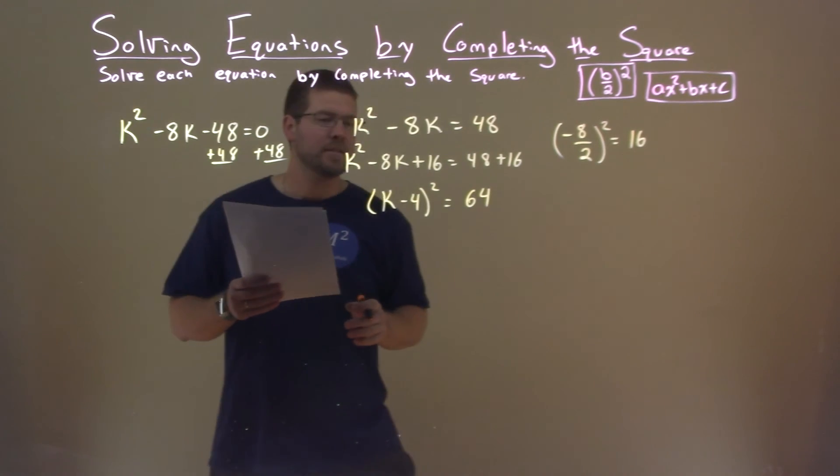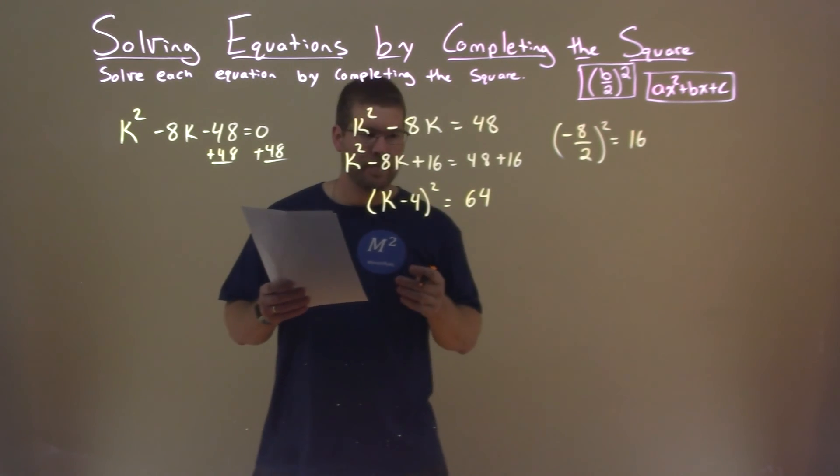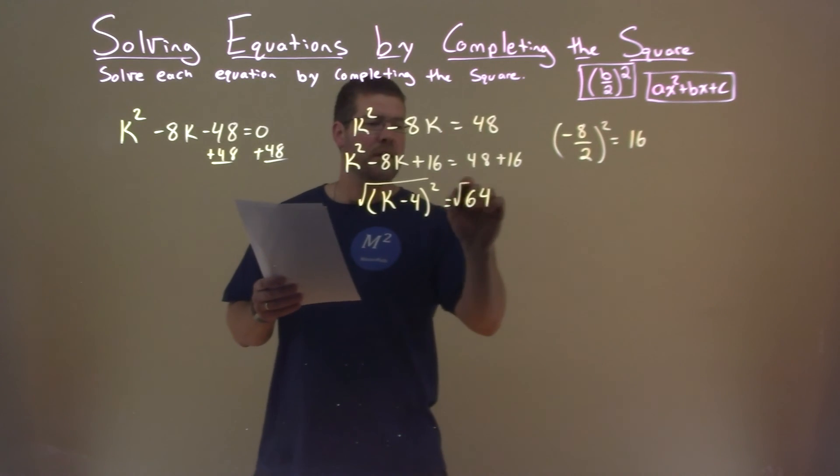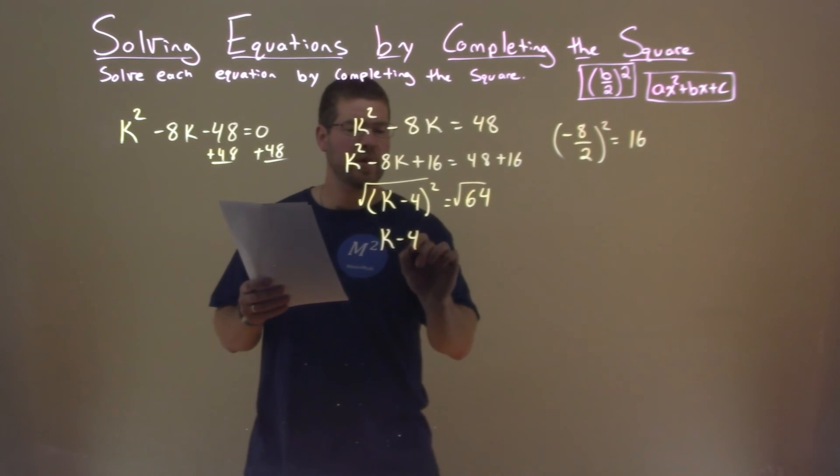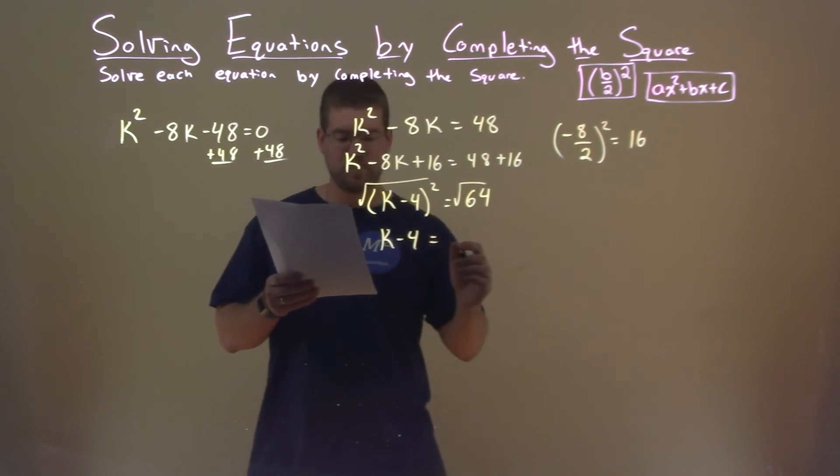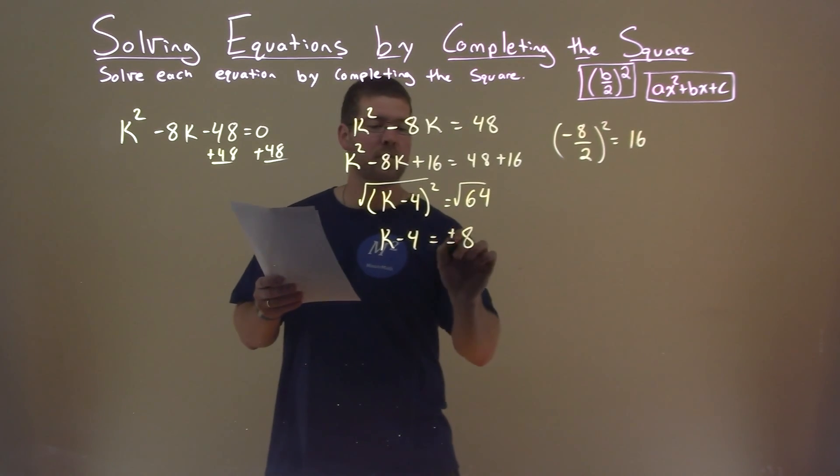All right, so where do we go from here? We have to take the square root of both sides, giving me k - 4, and the square root of 64 is 8. But don't forget the plus and minus.